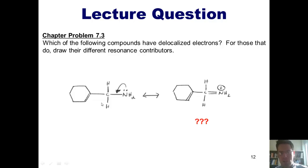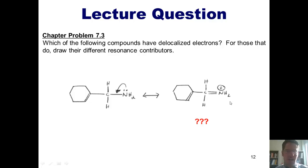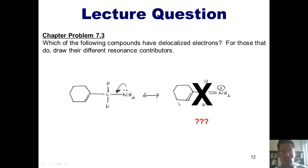You should notice that this carbon right in the middle now has five bonds or 10 electrons around it. Thus, this is not a legitimate movement of electrons, and this is not a resonance contributor. These lone pairs are too far removed from the double bond in order to have them participate in resonance.